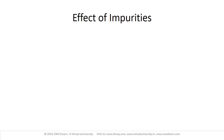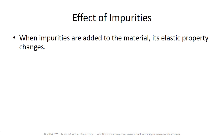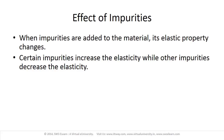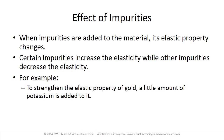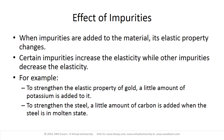Another effect on elasticity is that of impurities. When impurities are added to a material, its elastic property changes. Certain impurities increase the elasticity whereas others decrease it. For example, to strengthen the elastic property of gold, a little amount of potassium is added. Similarly, to strengthen steel, a little amount of carbon is added when the steel is in a molten state.